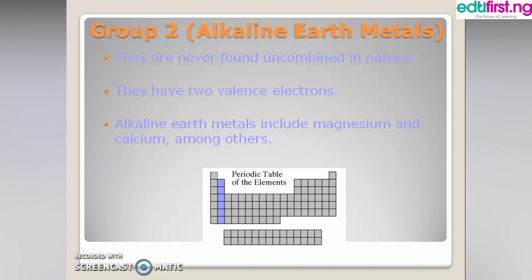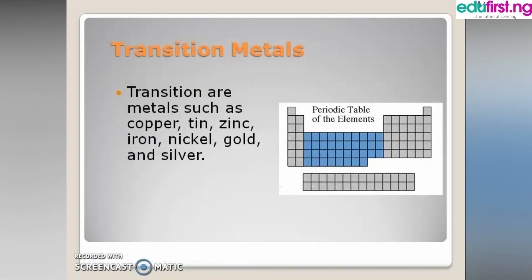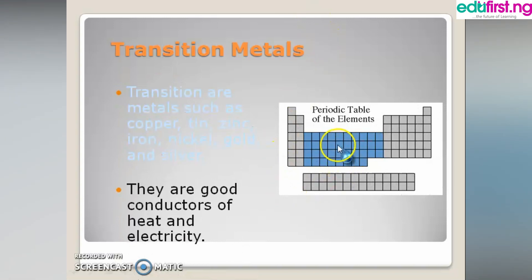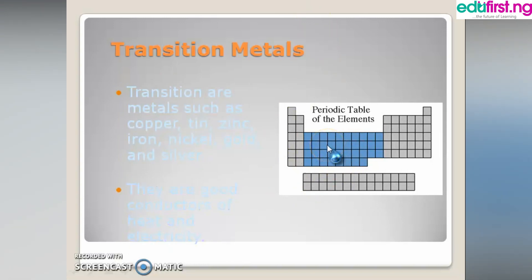Beneath we have the transition metals, which are between the group 2 elements — the alkaline earth metals — and the group 3 elements, which are the boron family. Transition elements include copper, zinc, iron, nickel, gold, and silver. They are good conductors of heat and electricity.